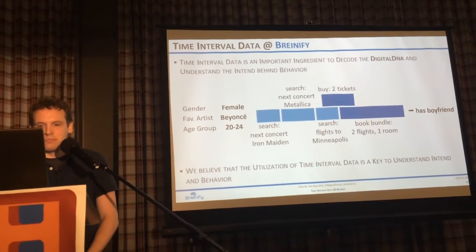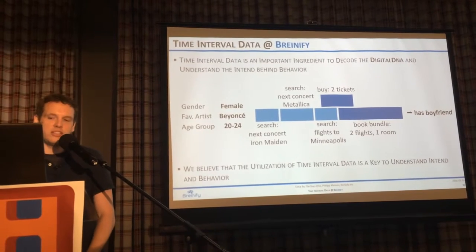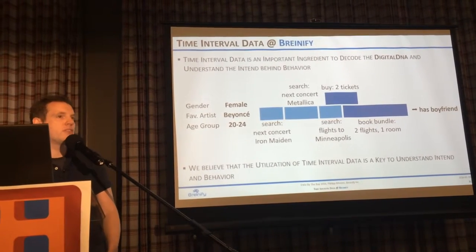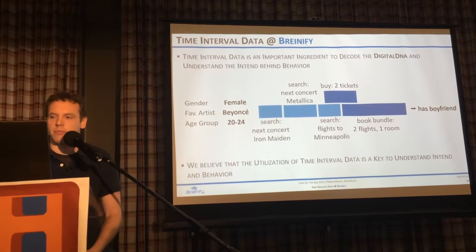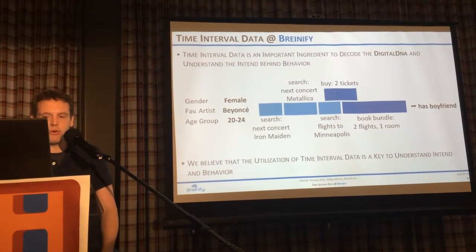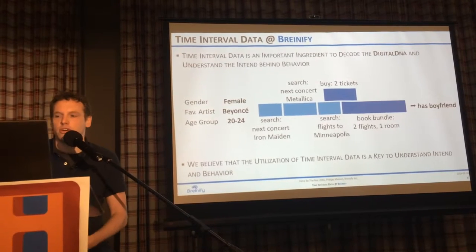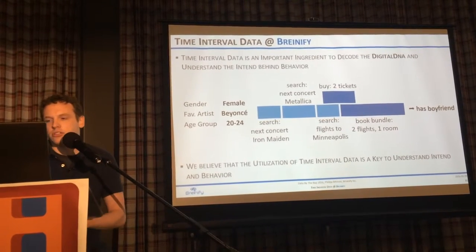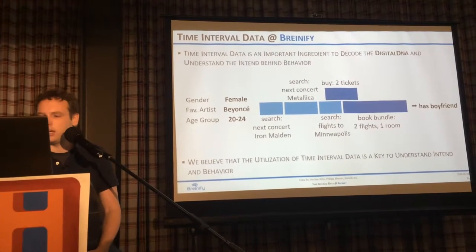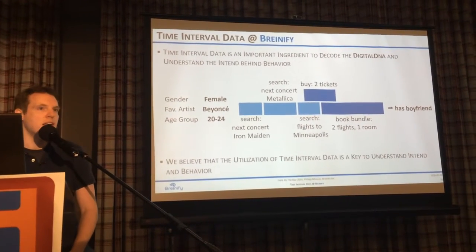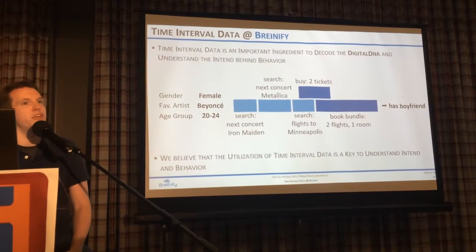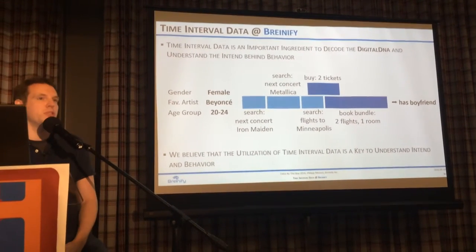One simple example: imagine we know about a person that she's female, that her favorite artist is Beyoncé, and that she's in the age group between 20 and 24. Now we see some intervals or events that happen for her, aligned along time. She searched for the next concert of Ariana Grande, then for a Metallica concert, then for a specific flight to Minneapolis. She buys two tickets and books a room — two flights and one room. When a system can align the data in the right way and add the right semantics and inferences, it might be capable of determining that she has a boyfriend.